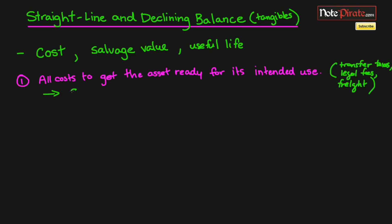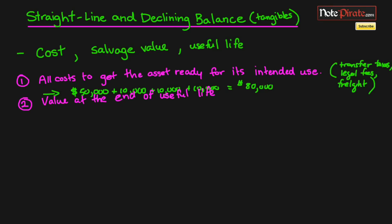To capitalize just means you can add those costs to the asset's total cost. So let's say our base cost is $50,000 and each of these additional items is $10,000. You add all those up and get your capitalized cost of $80,000, and that's what will appear on your balance sheet for that asset.